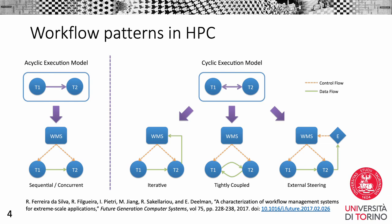Another example of a cyclic pattern is the tightly coupled pattern, in which steps T1 and T2 are executed at the same time, like in the concurrent case, but they keep exchanging partial results, so they work together. And finally, there is the external steering pattern, which is similar to iterative and concurrent patterns, but in this case T1 and T2 are executed at the same time, and the output produced by T2 is examined by an external agent, for example a user, that can decide if he wants to modify, cancel or update the execution of step T1 or take some other action.